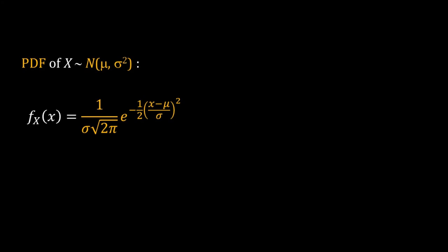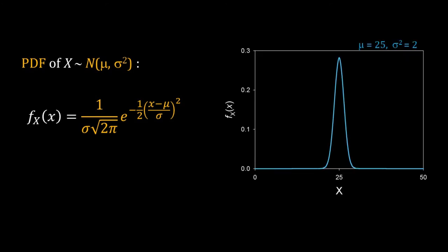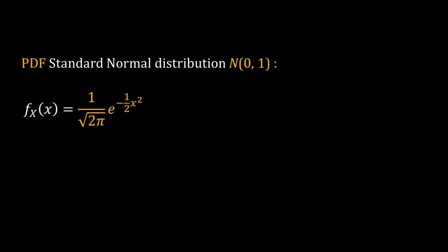Another common distribution is the normal distribution. The normal distribution has two parameters: mean μ and variance σ². Here is the PDF of the normal distribution. The normal distribution is symmetric and bell-shaped. The standard normal distribution is frequently used in stochastic modeling and statistics; its mean is 0 and variance is 1, so its PDF is (1/√(2π))·e^(−x²/2).